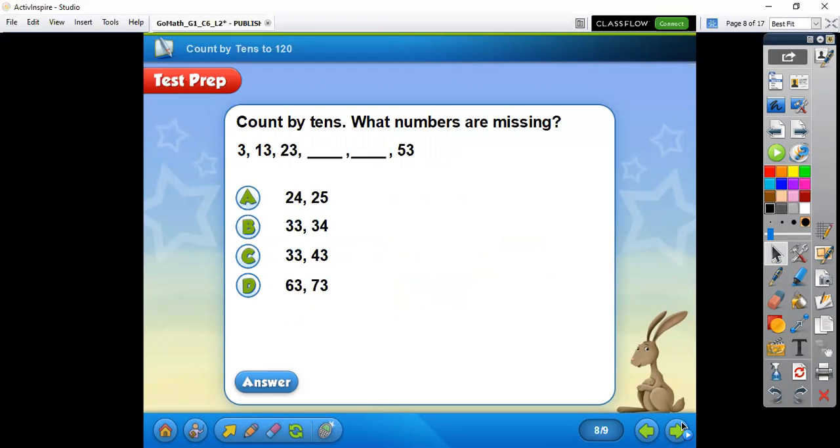And then we're going to practice this one. So if we're counting by tens, what would our missing numbers be? 3, 13, 23. What would our next number be? Right, 33.